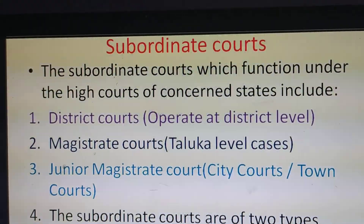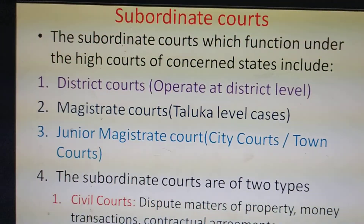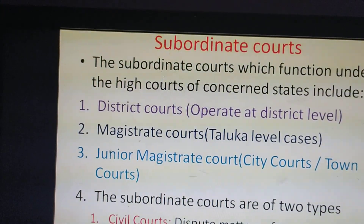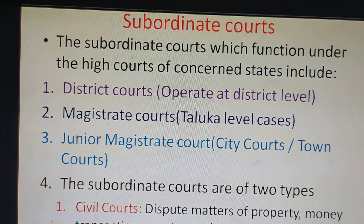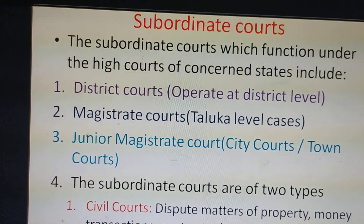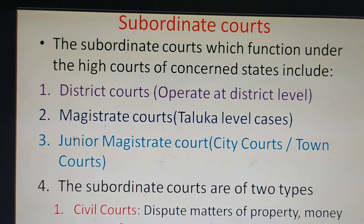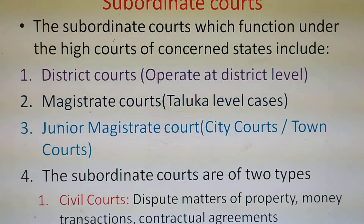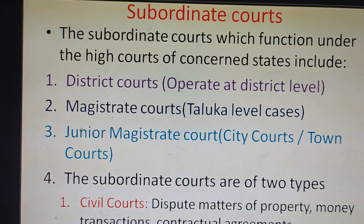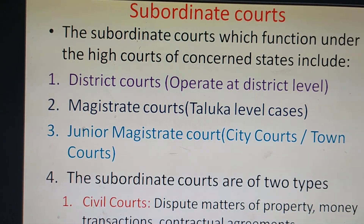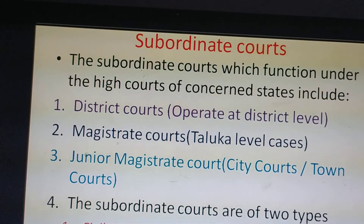The third type of court is the subordinate courts, which function under the Supreme Court and the High Court. Subordinate courts are classified into three types by area: District Courts, which operate at the district level; Magistrate Courts, which operate at the taluk level; and Junior Magistrate Courts.